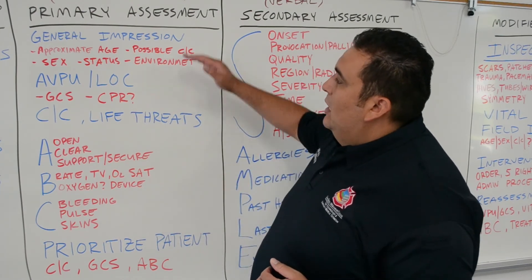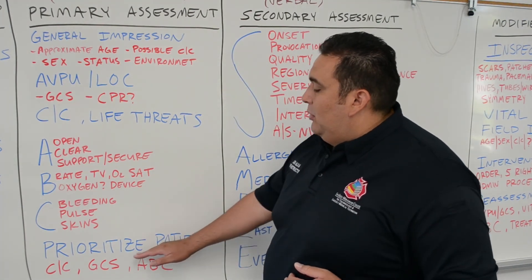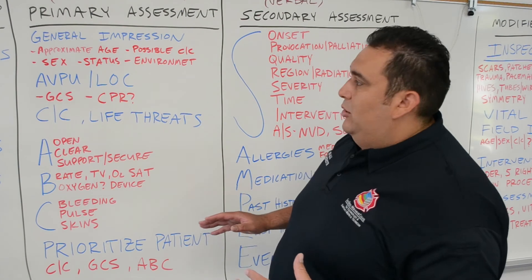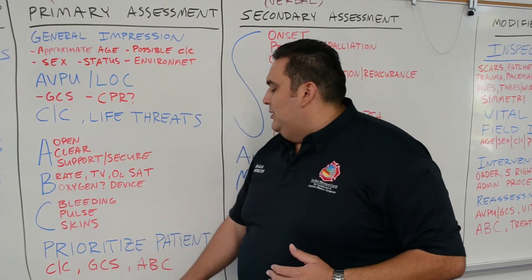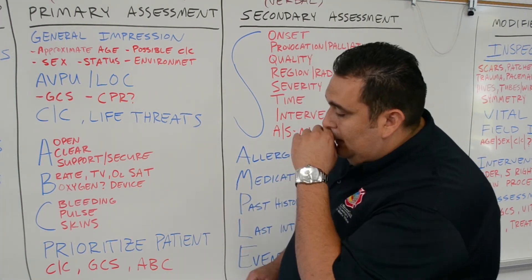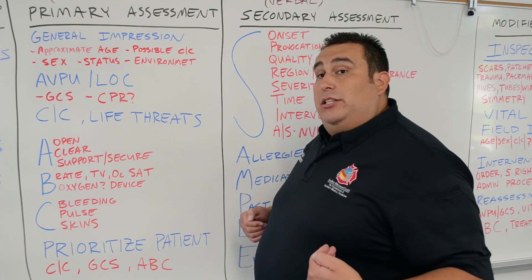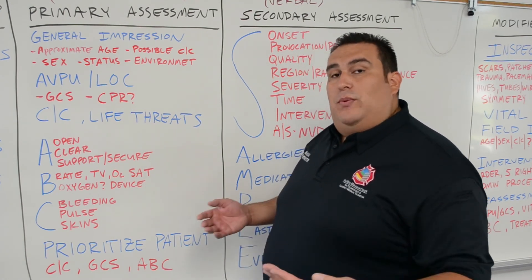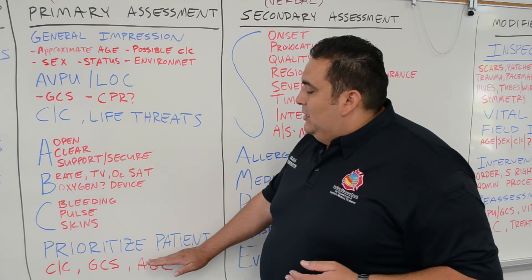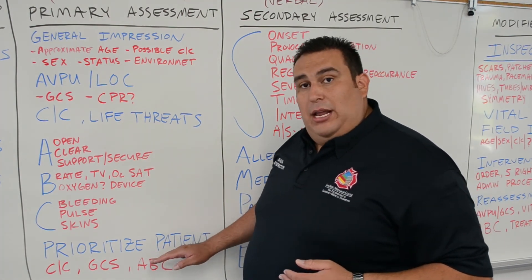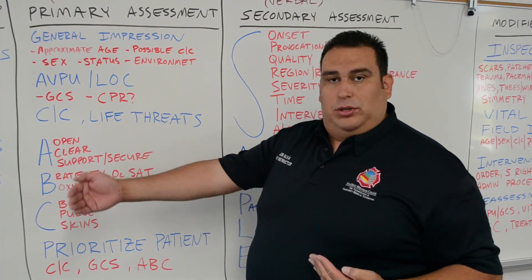Once the primary assessment is established, prioritize the patient using the chief complaint, GCS, and ABCs. Based on these, determine whether the patient needs to be transported immediately or if there are a few minutes to stay on scene and gather more information. If the patient is a priority, load them up and continue the rest of the assessment en route to the hospital.